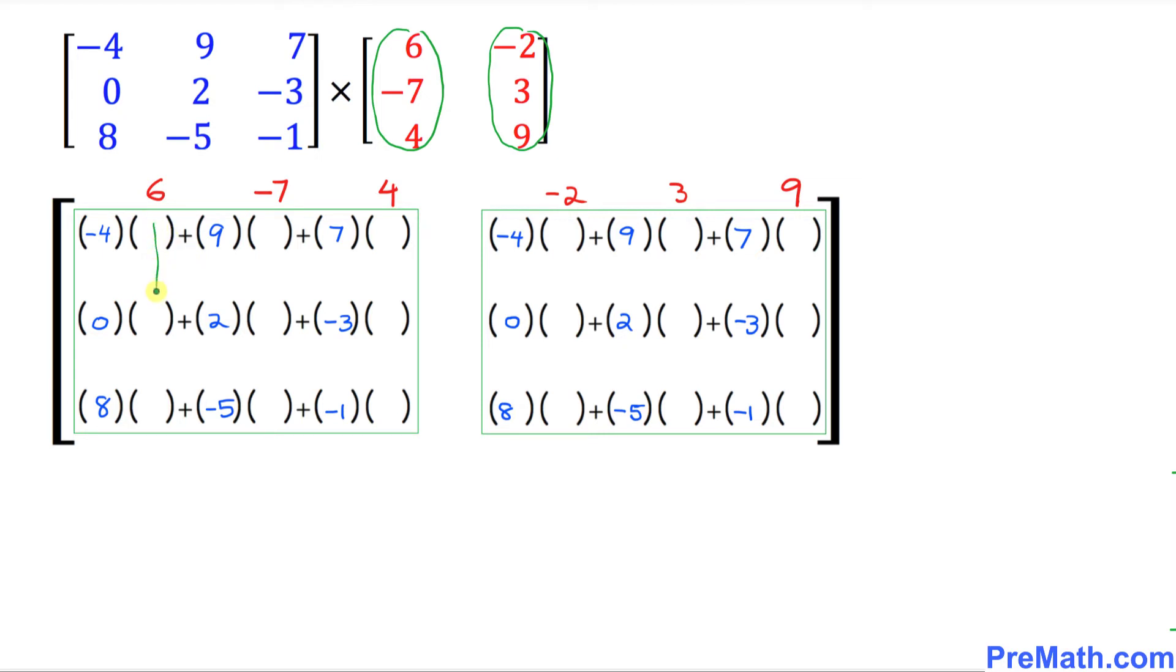So the next step is, I want you to just simply fill out, filter in this 6 over here, negative 7 over here, this 4 over here. Let me just show you how we're going to do this thing. So that means this number is going to be 6, 6, 6. Here is going to be negative 7, negative 7, negative 7, 4, 4, 4.